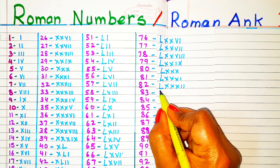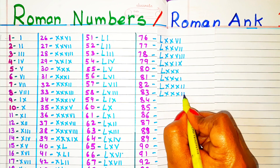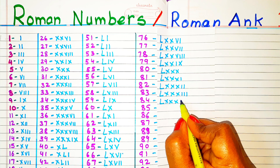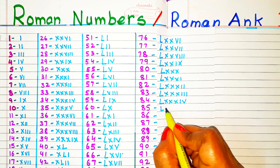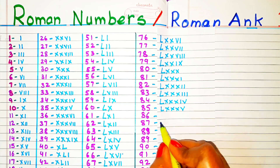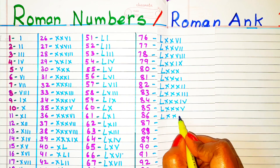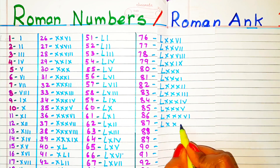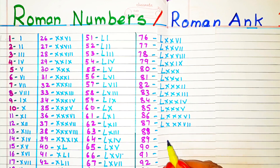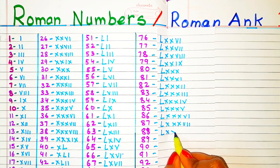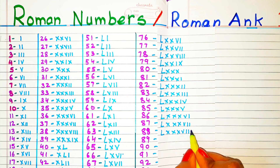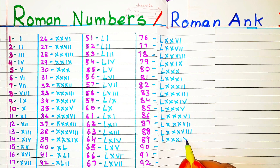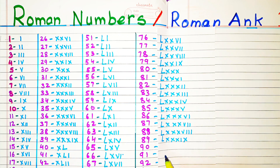81: LXXXI. 82: LXXXII. 83: LXXXIII. 84: LXXXIV. 85: LXXXV. 86: LXXXVI. 87: LXXXVII. 88: LXXXVIII. 89: LXXXIX. 90: XC.